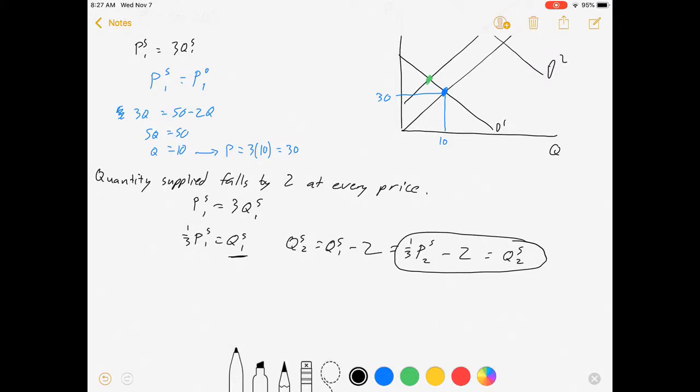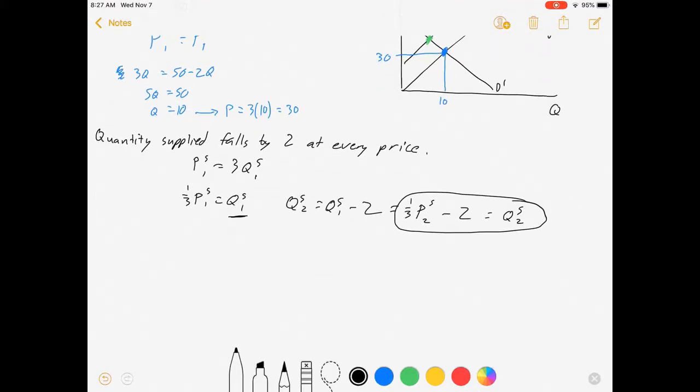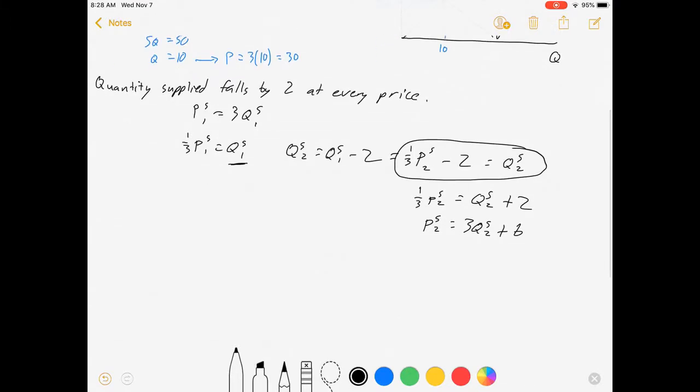Now we can solve for equilibrium, except this is a supply curve, but our demand curve is an inverse demand curve. So I'm going to switch this back around and solve for p again. 1 third ps2 is equal to q plus 2. So ps2 is equal to 3 qs2 plus 6. Now I can set them equal to each other.